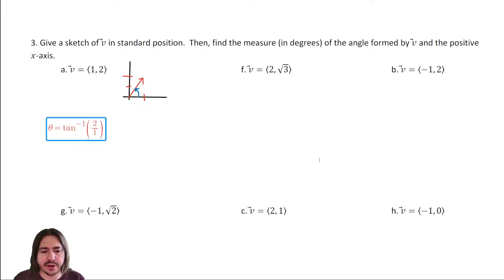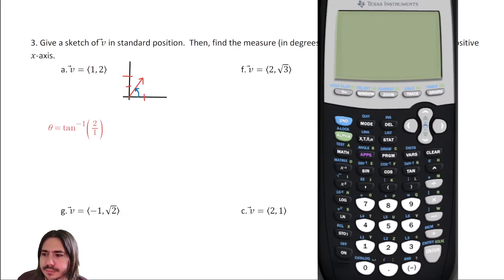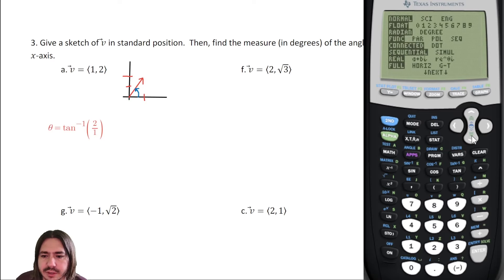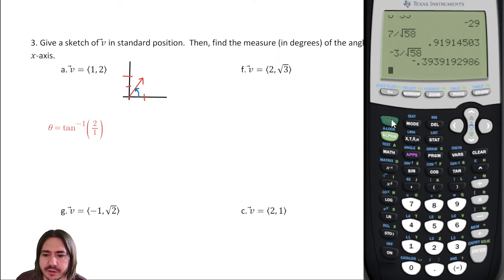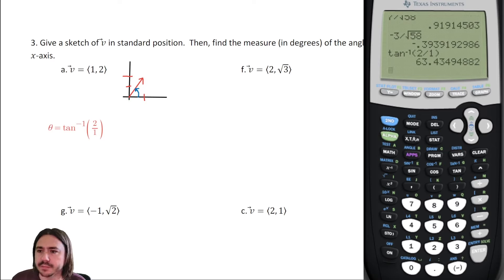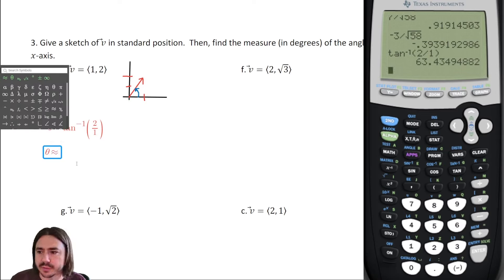This isn't a ratio we can find easily on the unit circle, so we use the calculator. First make sure you're in degrees mode. Taking the inverse tangent of two over one, we get approximately sixty-three degrees. So theta is approximately sixty-three degrees.